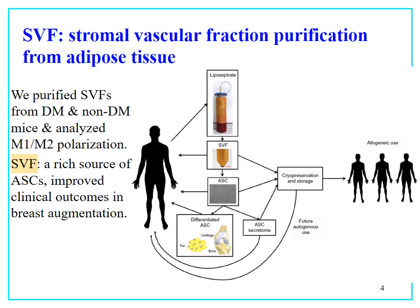We can harvest a large amount of adipose tissue from humans through liposuction. Then we can obtain the stromal vascular fraction (SVF) and adipose stem cells from the adipose tissue. Therefore, we first used the SVF from the animal to study the M1 and M2 polarization of the mouse.